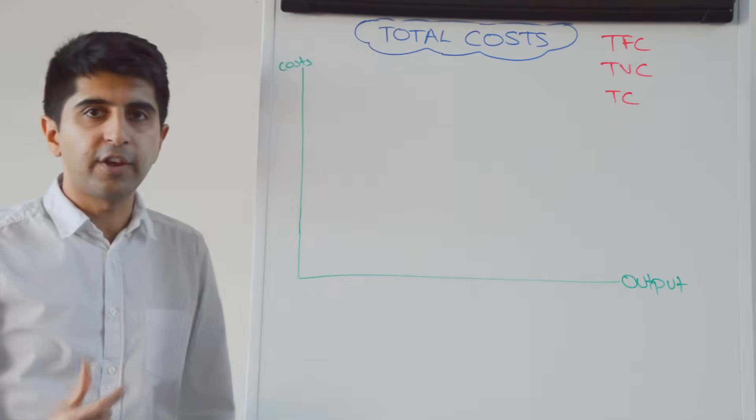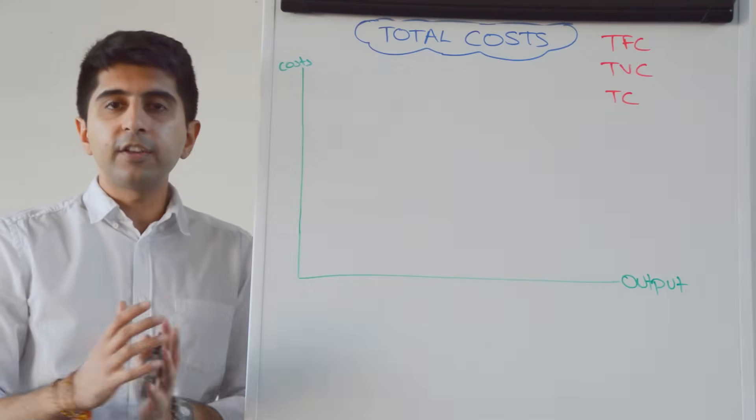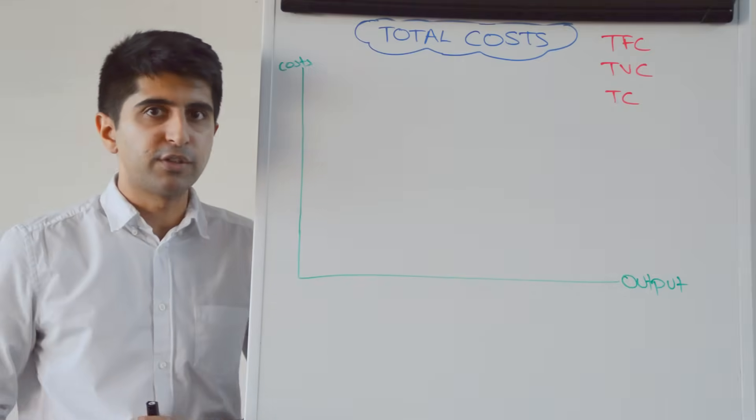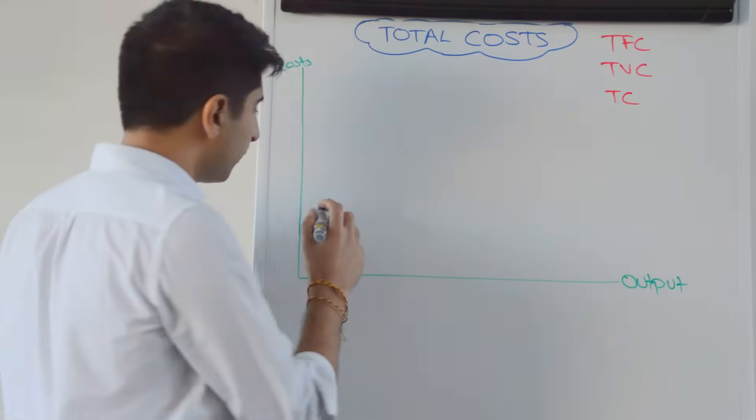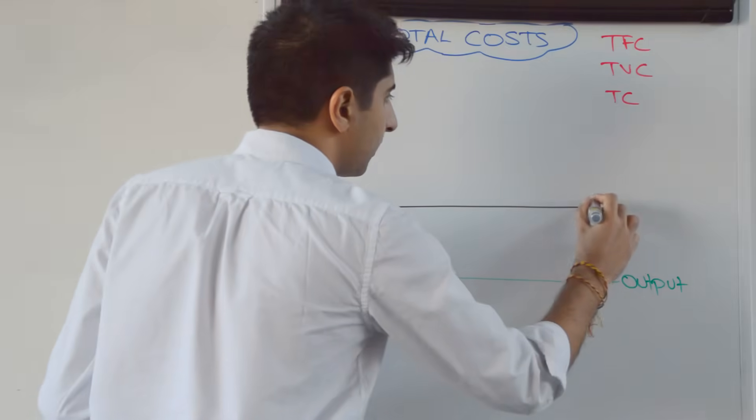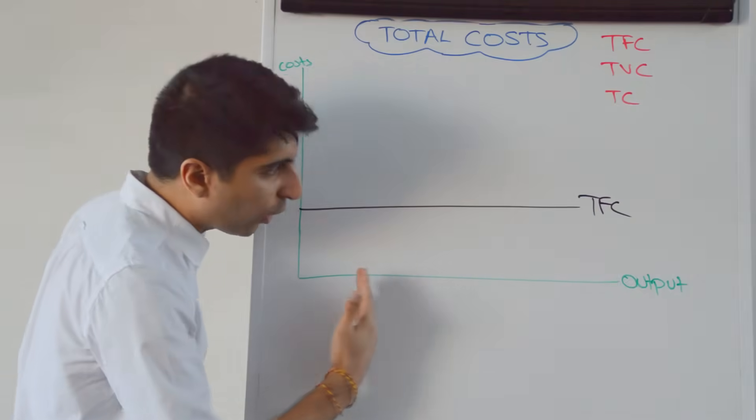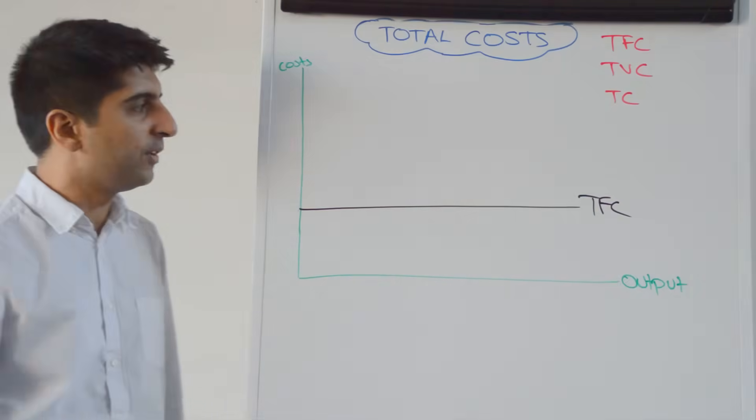Let's take total fixed costs first. Remember what fixed costs are? Fixed costs do not vary with output at all. They are constant over a range of output, which means the total fixed cost curve is going to be constant. It's going to be a horizontal line that looks like that. Constant over a range of output.